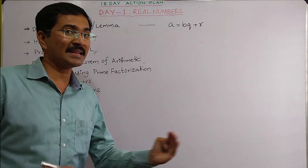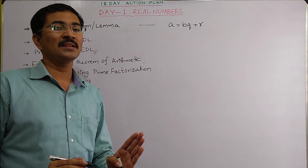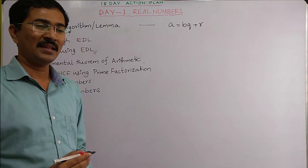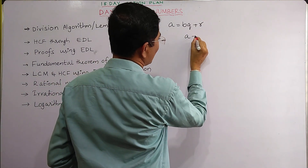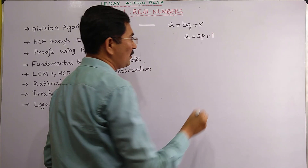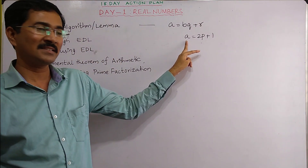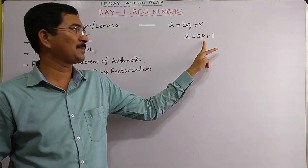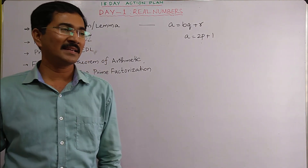For example, 11 = 3×3 + 2. If something is given like a = 2p + 1, you must be able to understand that the positive integer a is divided by 2, the quotient is p, and the remainder is 1. Comparing with the formula, a is a, b is 2, q is p, and r is 1.